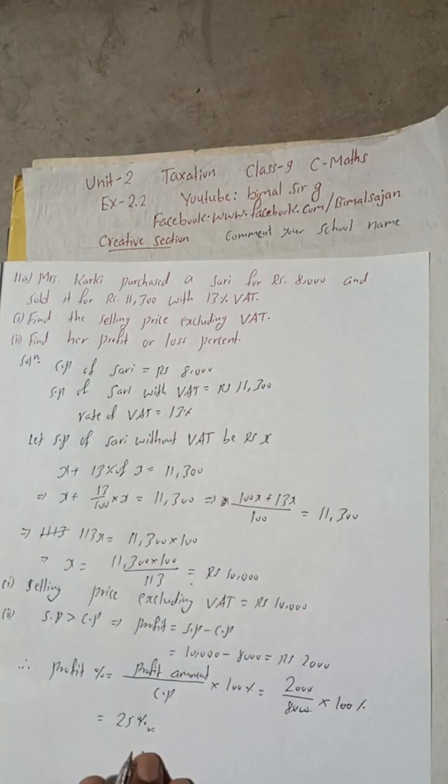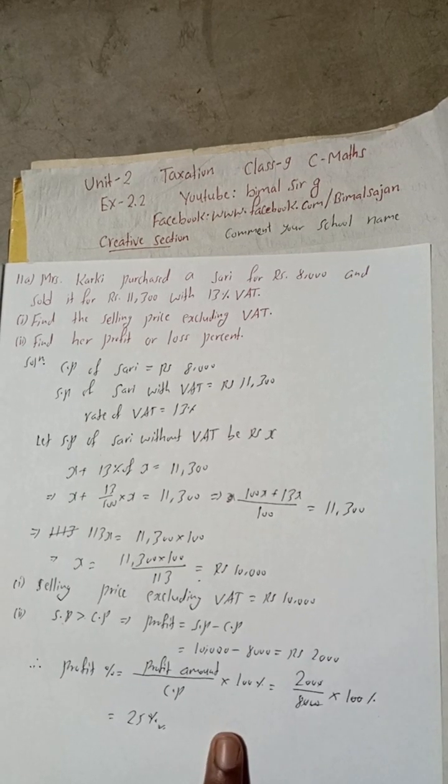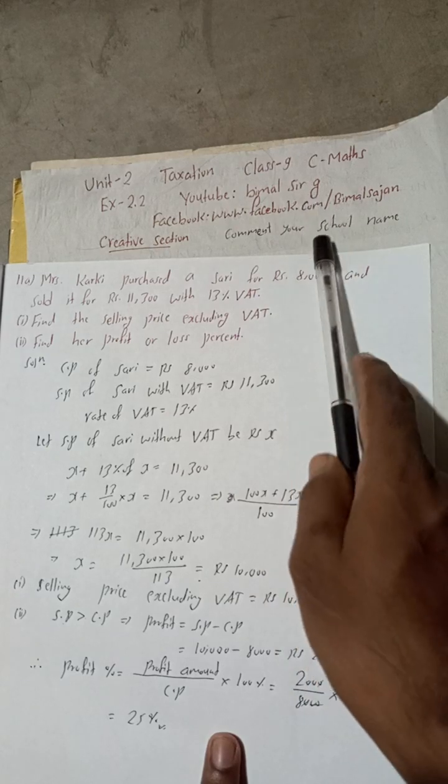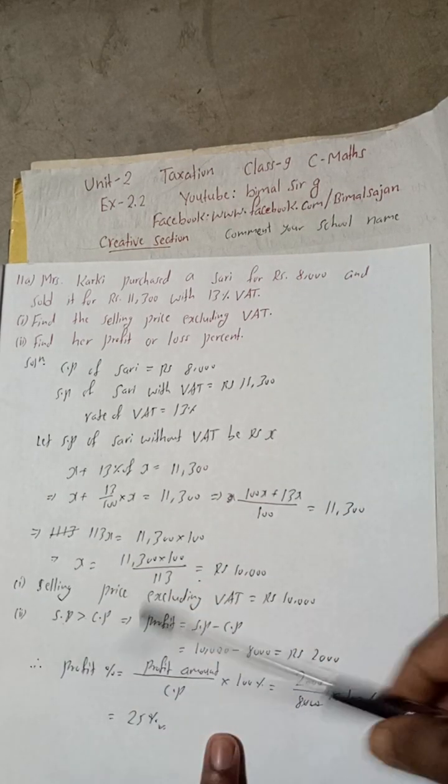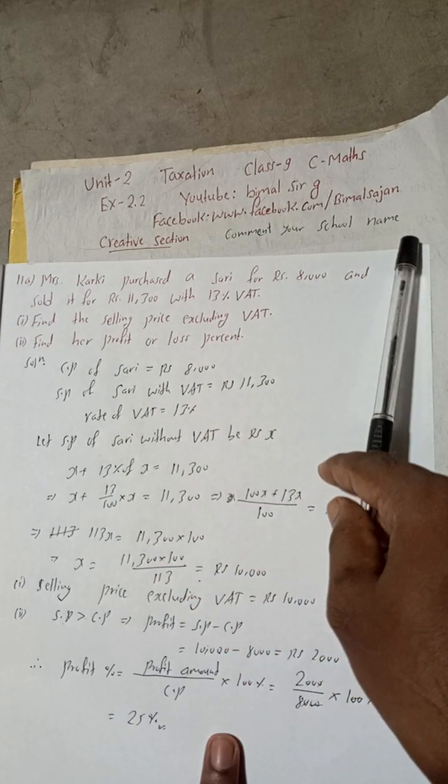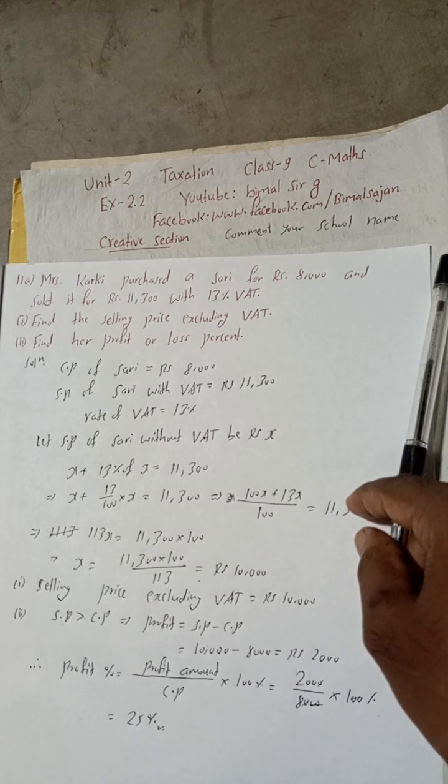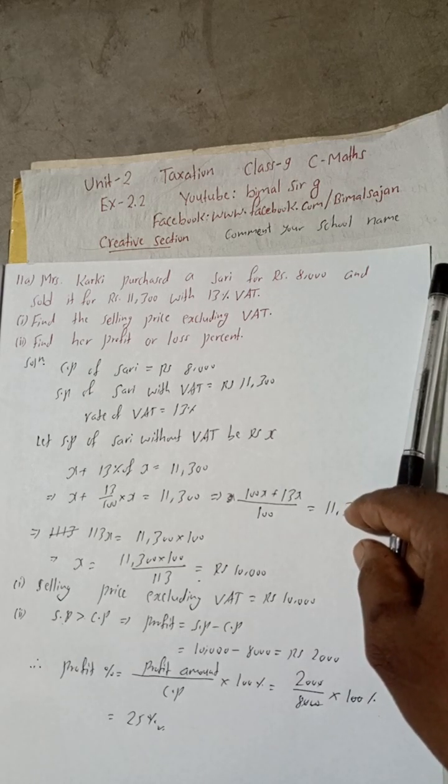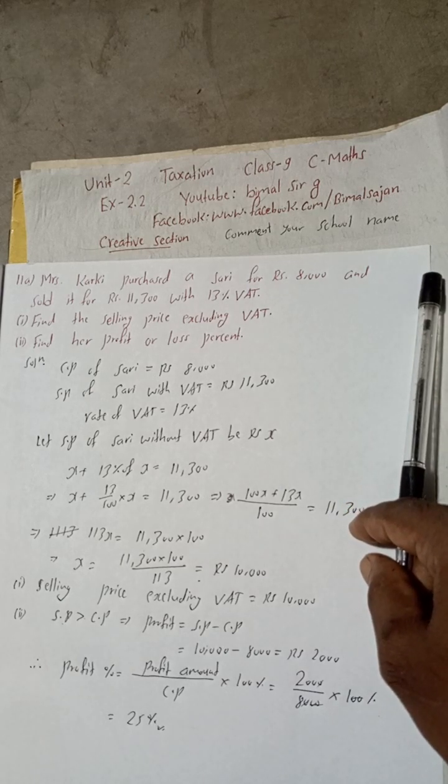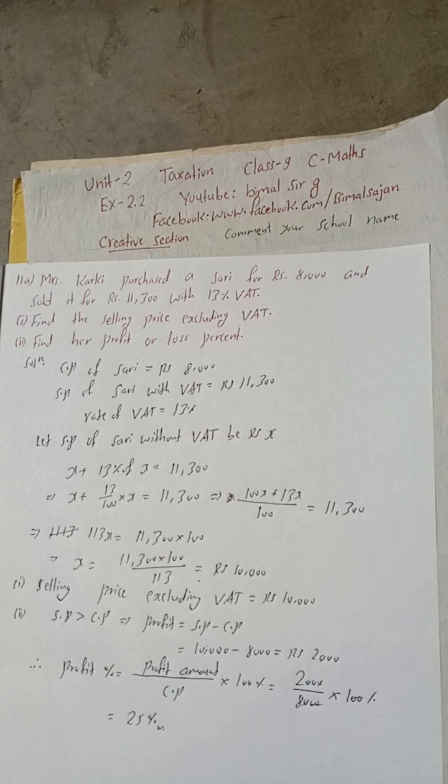So profit is 25 percent. So this is the solution for you, class 9 and 10 students. Keep watching, keep supporting. If you find this solution useful, then give a sweet comment and also comment your school name if you haven't commented anywhere, so that I can know you and give more priority to your comments. Keep watching, keep supporting. See you in the next videos. Radhe Radhe, Jai Shri Krishna.